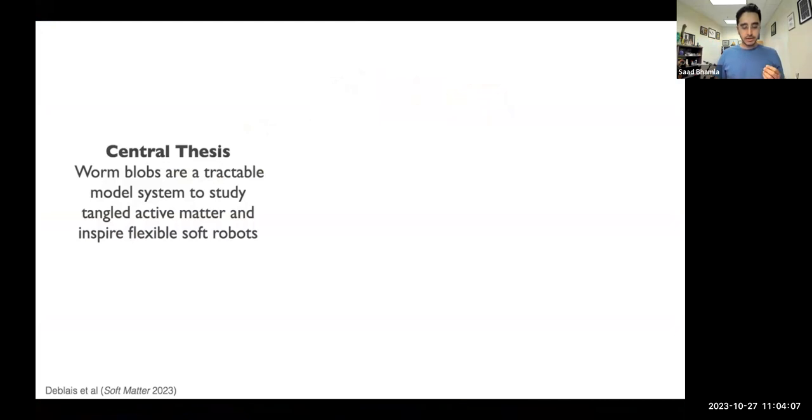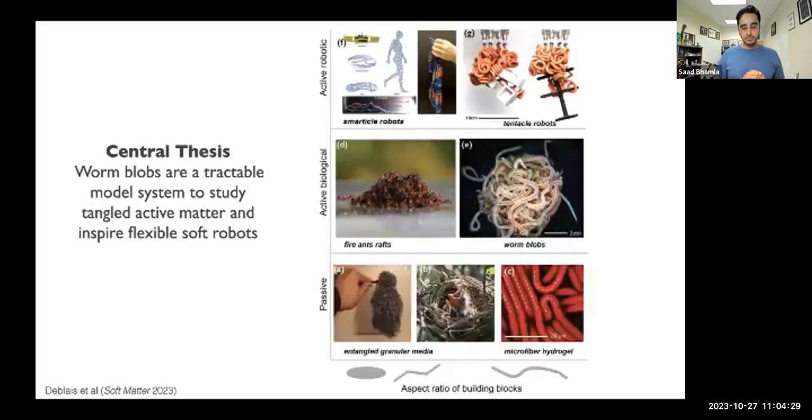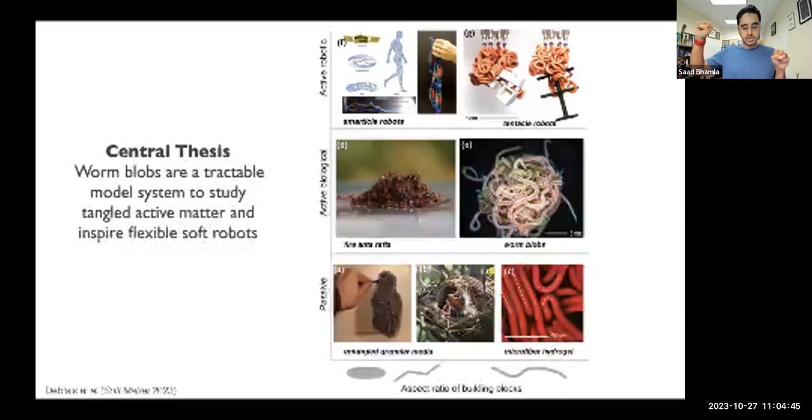My central thesis today, hopefully in the next 20 minutes or so, I'll try to illustrate that worm blobs are a tractable model system that allows us to study these tangled active matter or living polymers, if you will. They may help shed some insight into how we may design flexible soft robots. To give some context here, this is an image from a review paper from Soft Matter we wrote a few months ago. On the x-axis you can see that we're expanding our aspect ratio going from spherical ellipsoidal to very, very highly asymmetric, stretchy, flexible systems.